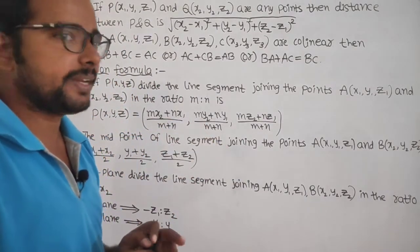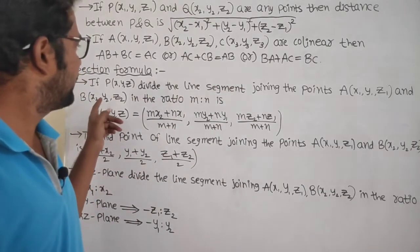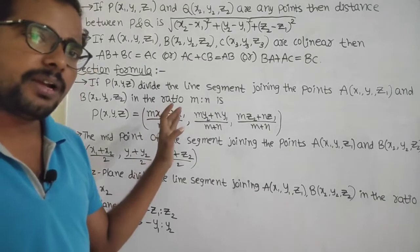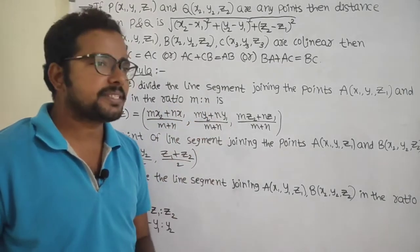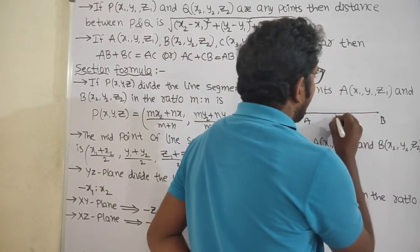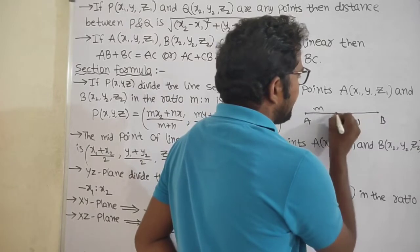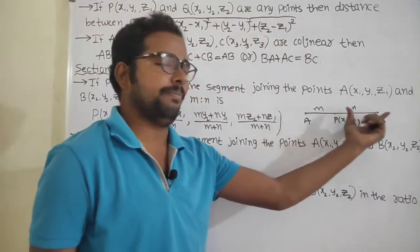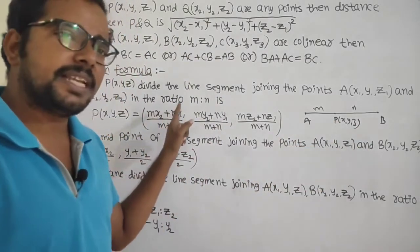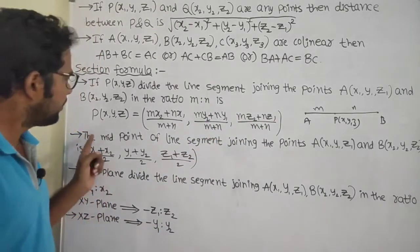If P of (x1, y1, z1) and Q of (x2, y2, z2) are two points, then the distance between P and Q is the square root of (x2 − x1)² + (y2 − y1)² + (z2 − z1)². The section formula: if P divides the line segment joining A(x1, y1, z1) and B(x2, y2, z2) in the ratio m:n, then the coordinates of P are ((mx2 + nx1)/(m+n), (my2 + ny1)/(m+n), (mz2 + nz1)/(m+n)).